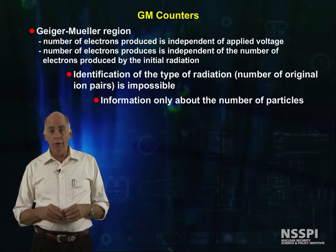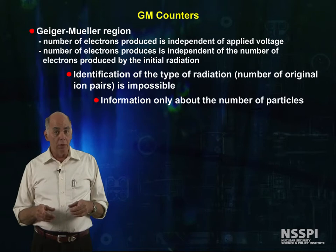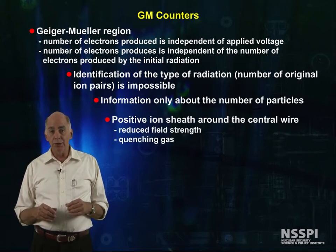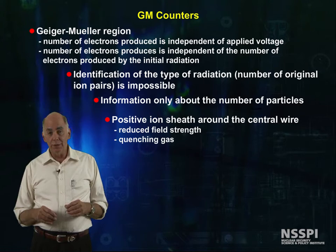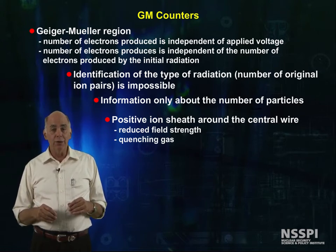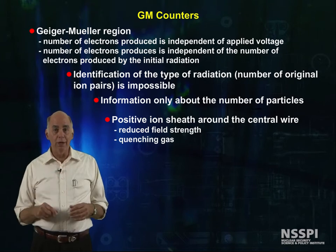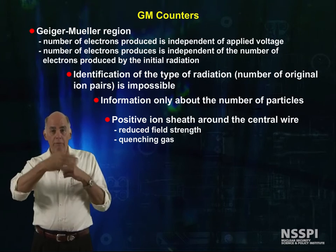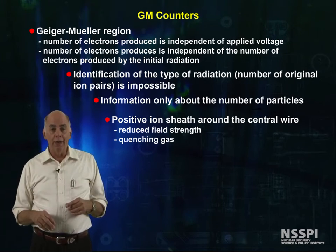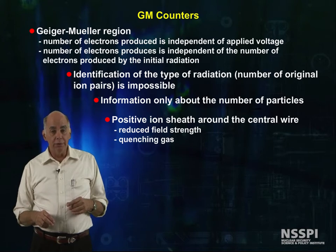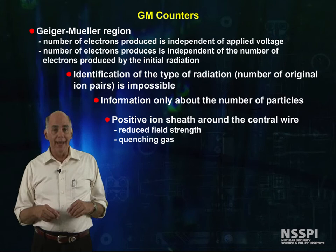The only information available is about the number of particles. The GM detector would discharge continuously after the first pulse, except that positive ions around the central anode wire form a sheath around the wire, reducing the apparent field strength. Also, a quench gas is normally added.